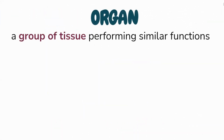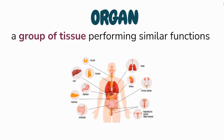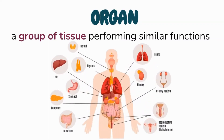An organ is a group of tissues performing similar functions. It is a system of tissue that works on a large scale to do a certain job within an animal's body. Examples of organs are the brain, heart, and lungs.